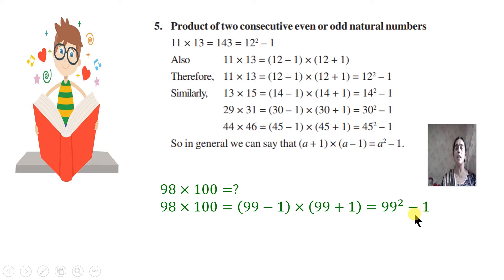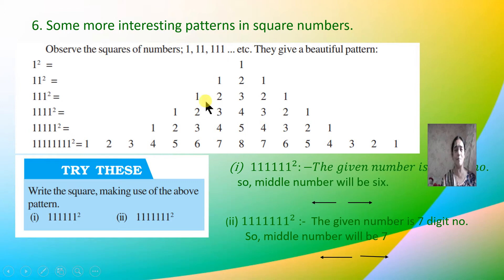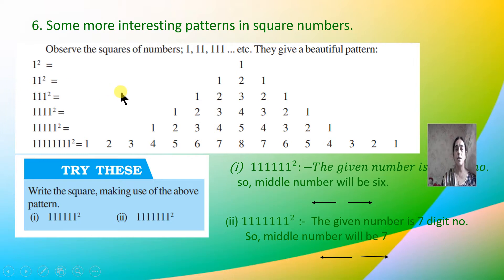Now let's go to one more interesting pattern. Observe the squares of numbers made of only 1s: 1, 11, 111, and so on. They give a beautiful and easy pattern. The digit 1 squared is 1. For 11 squared, there are two 1s, so we go from 1 up to 2 and then reverse: giving 1, 2, 1. For 111 squared, there are three 1s, so we go 1, 2, 3 and then reverse to give 1, 2, 3, 2, 1.